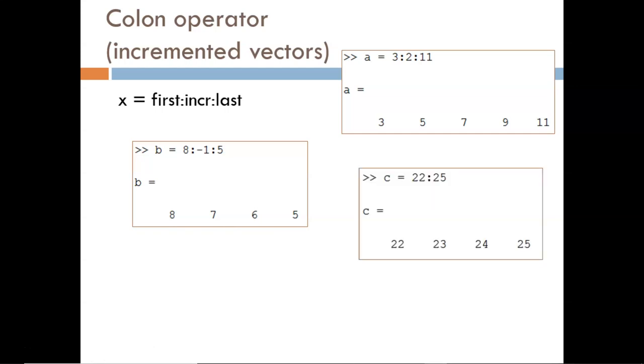In example C, we leave out the increment amount and only provide the starting and ending values. MATLAB by default will assign an increment amount of 1. This is a little shortcut that is commonly used because 1 is the most common step.